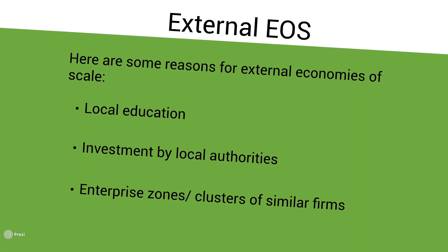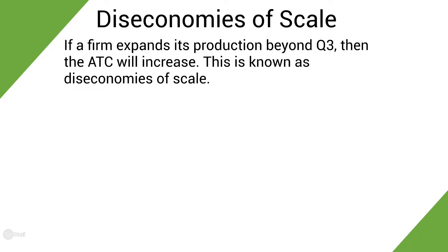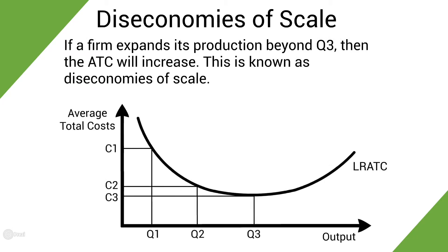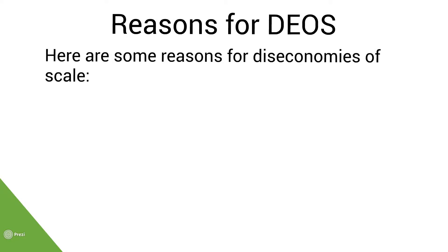We've now looked at economies of scale, but we also have diseconomies of scale. If a firm expanded its production beyond a quantity of Q3, then the firm's average total cost will increase. This is known as diseconomies of scale. There are a variety of reasons for diseconomies of scale, and here we have some examples.